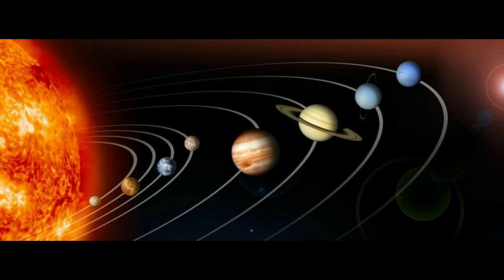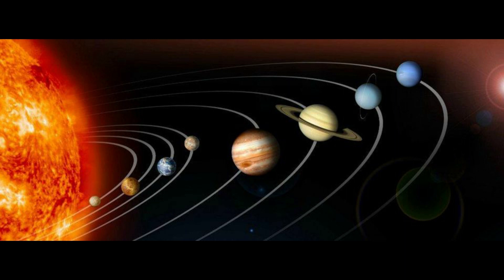That is the sun. There are 8 planets. Pluto is a dwarf planet, so now there are 8 planets.